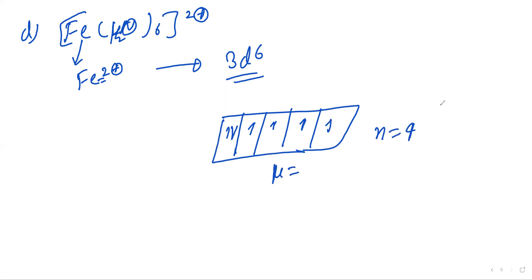Put four in the formula. This will be 4 into 4 plus 2, so it is 24, it is 25. So it will be 4.9 Bohr magnetone.